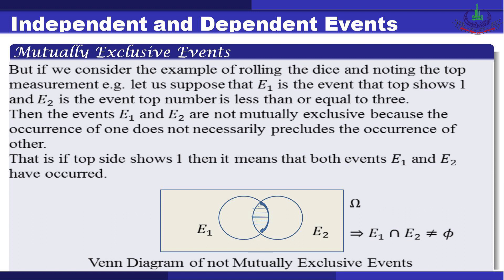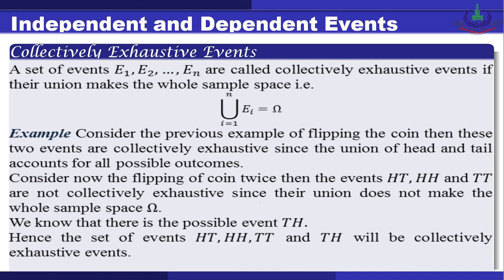Now consider rolling a dice. Let E1 be the event that the top shows one, and E2 be the event that the top number is less than or equal to three. These events are not mutually exclusive because if the top shows one, both E1 and E2 have occurred. The Venn diagram shows two overlapping circles, confirming E1 intersection E2 is not empty.